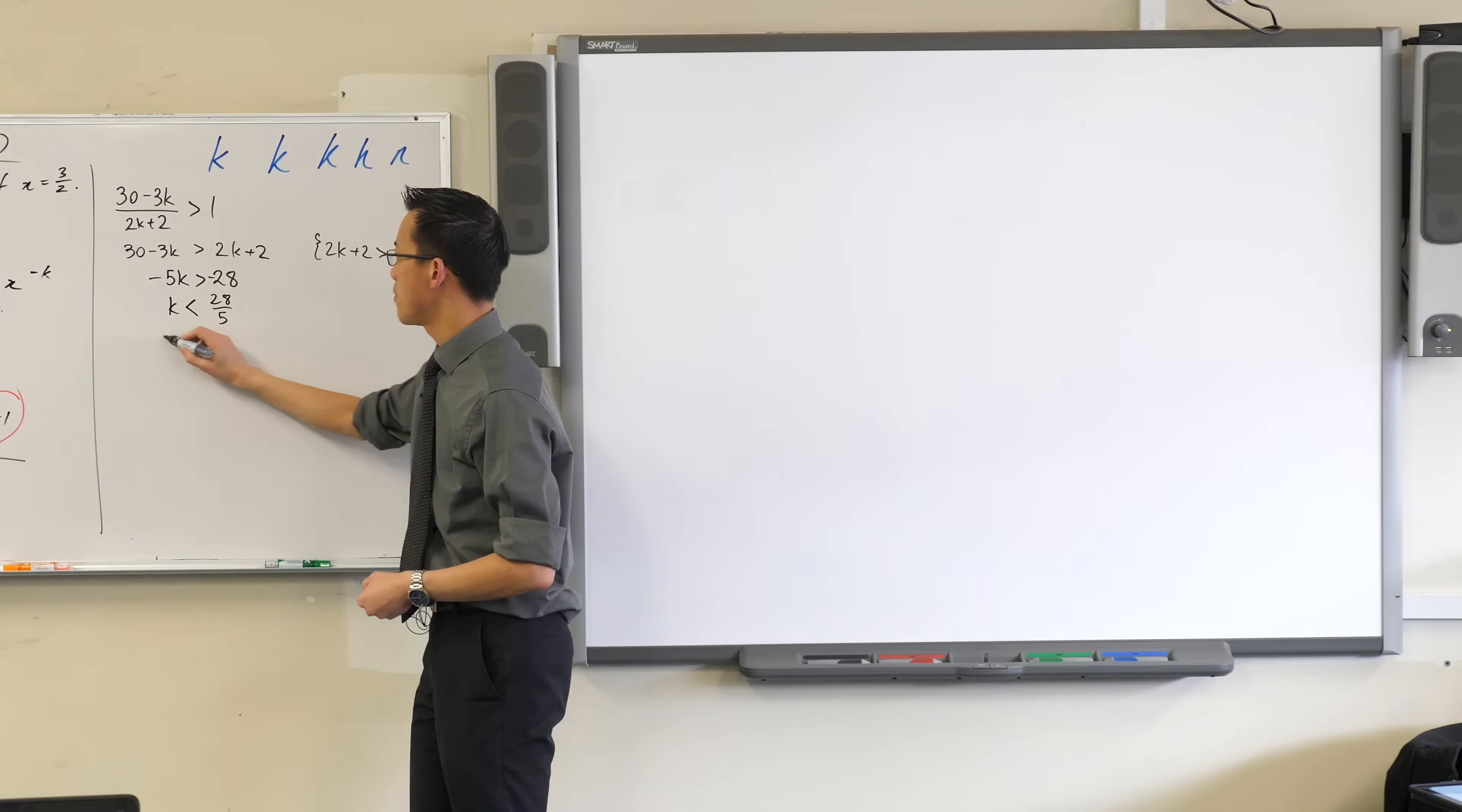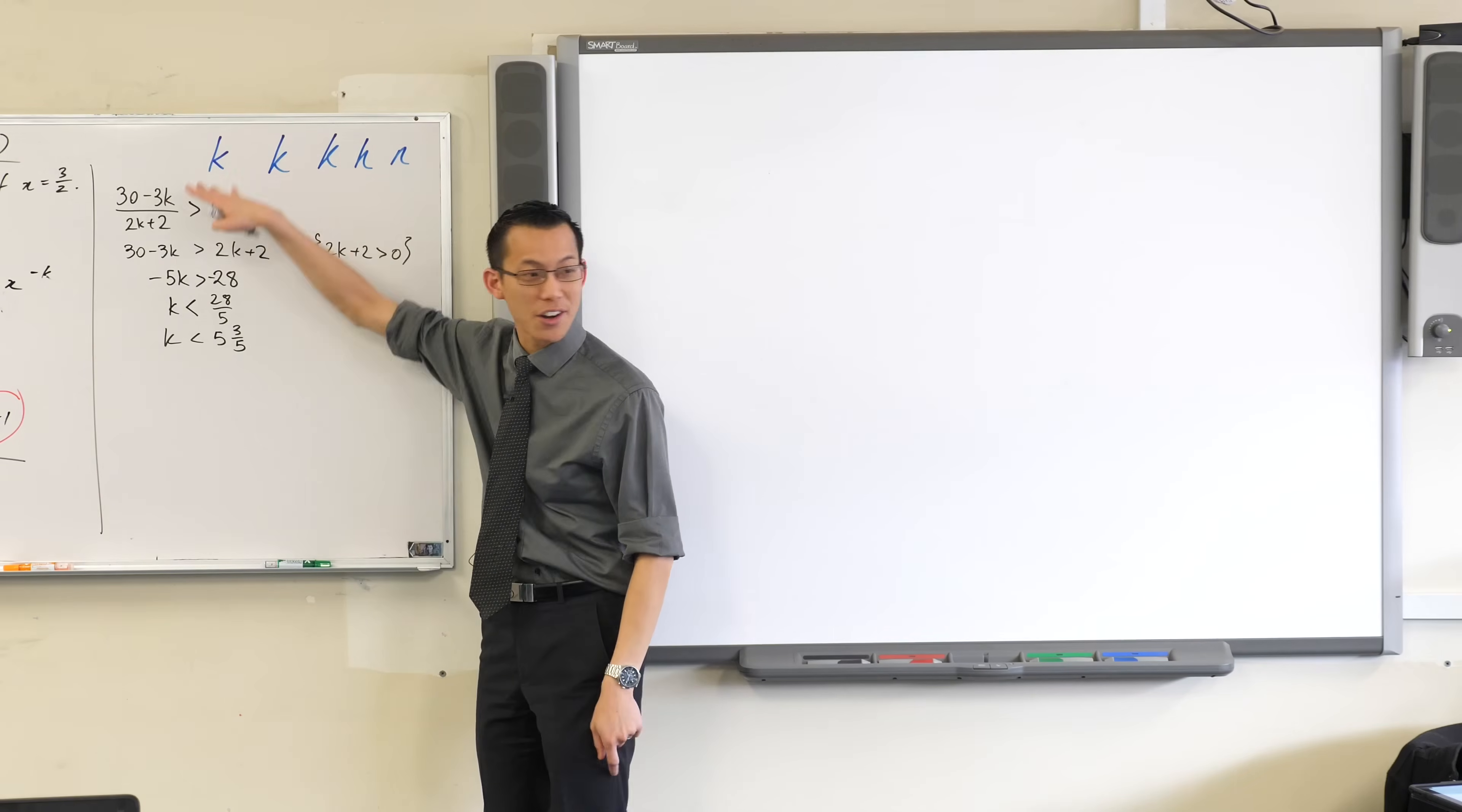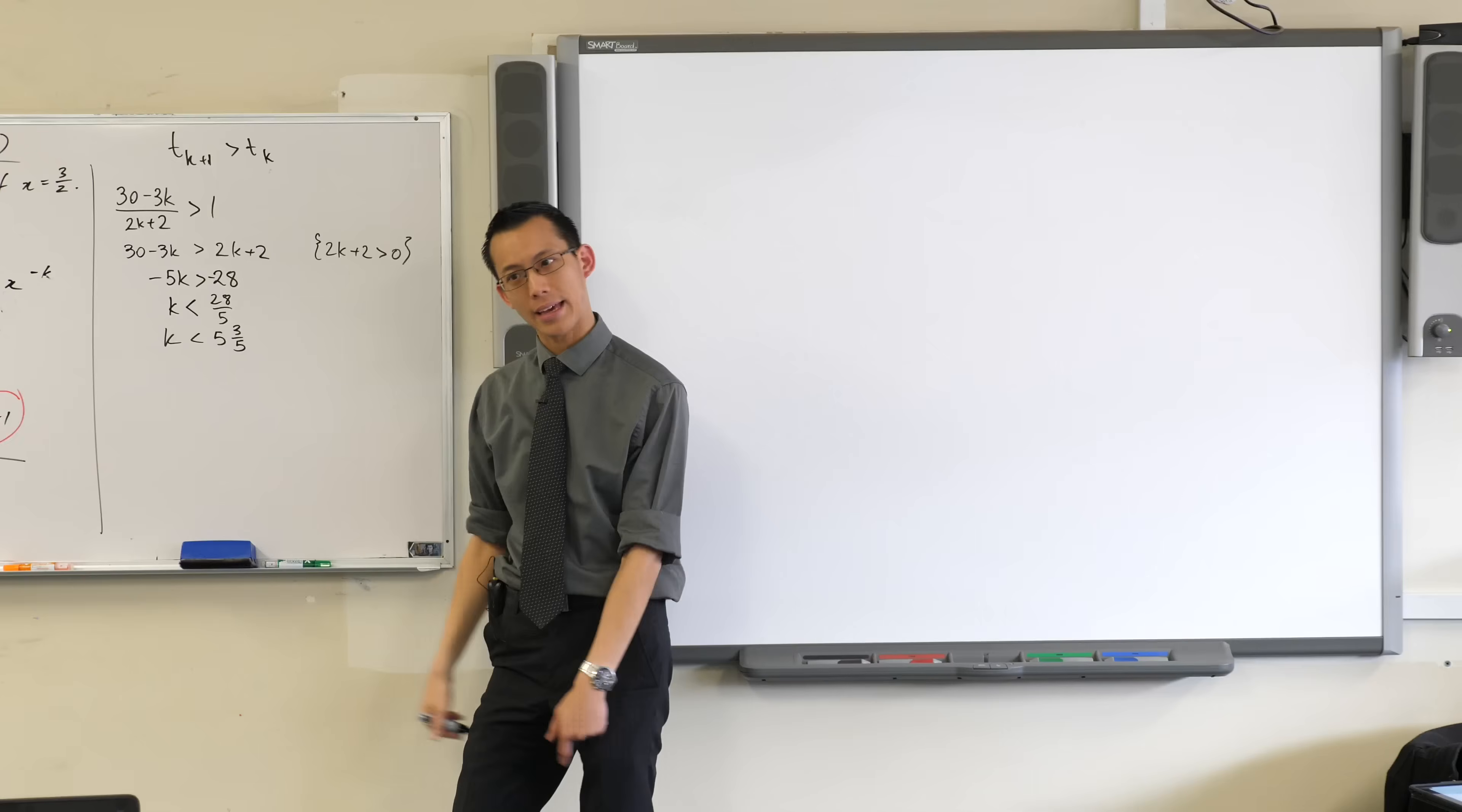I get 28 over 5 here, but it might be more useful to write that as 5 and 3 fifths. Is that okay? Now what does this mean? Well, the first line that we wrote down when we started off on this big long messy inequality was this: t of k plus 1 is greater than t of k. That's what we first wrote down.